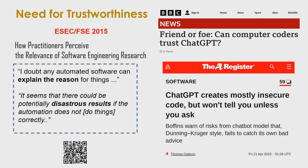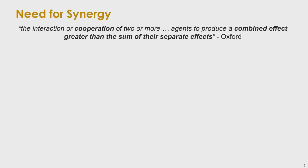Another interesting direction related to trust is synergistic AI for software engineering. Looking at the Oxford Dictionary definition of synergy: cooperation between multiple agents so that the combined effect is greater than the sum of its parts. When humans work alone, AI works alone — ideally when they work together, the combined effect should be bigger than the individual parts.